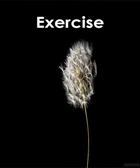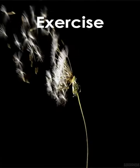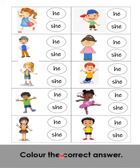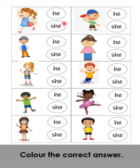Okay, we go to the exercise. Phase 1: Colour the correct answer. Look at the picture of a person — if the picture is male or female, we choose accordingly. If it is a female, we put 'she'. If it is a male, we put 'he'.